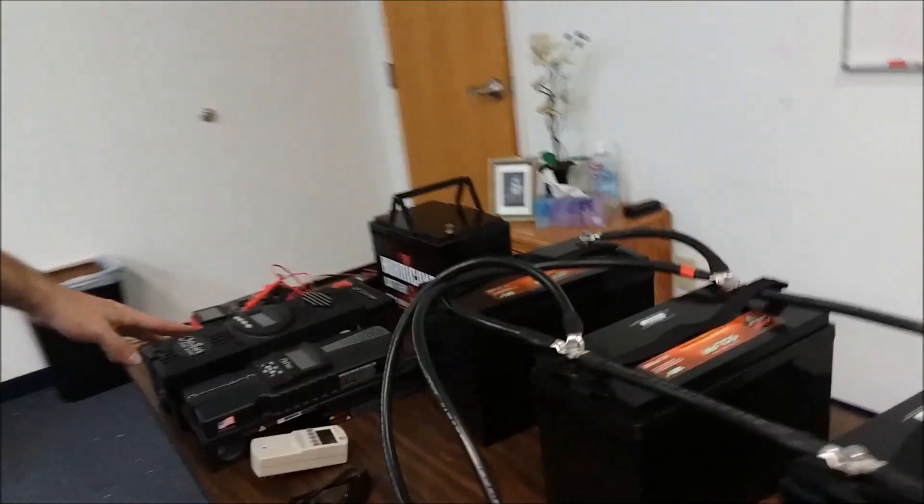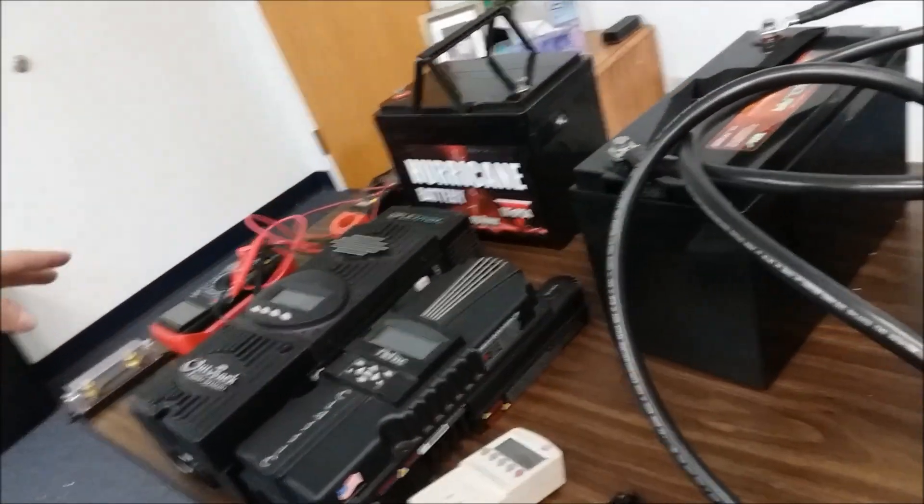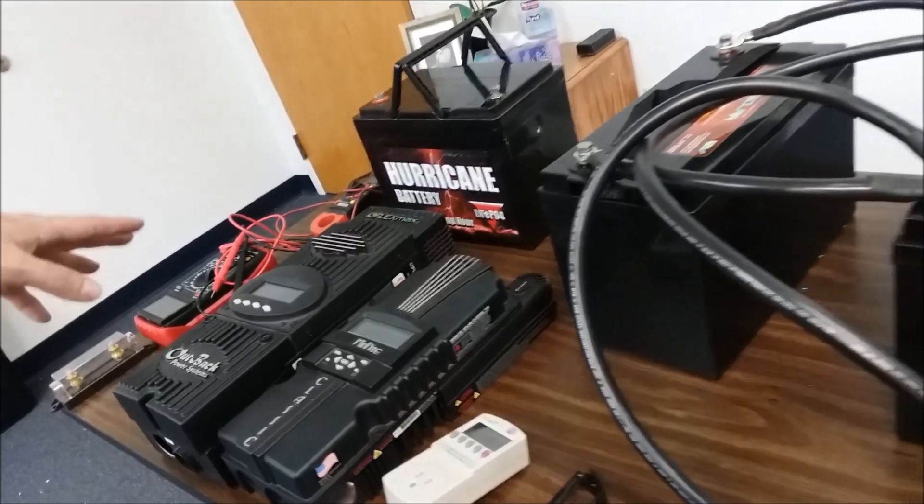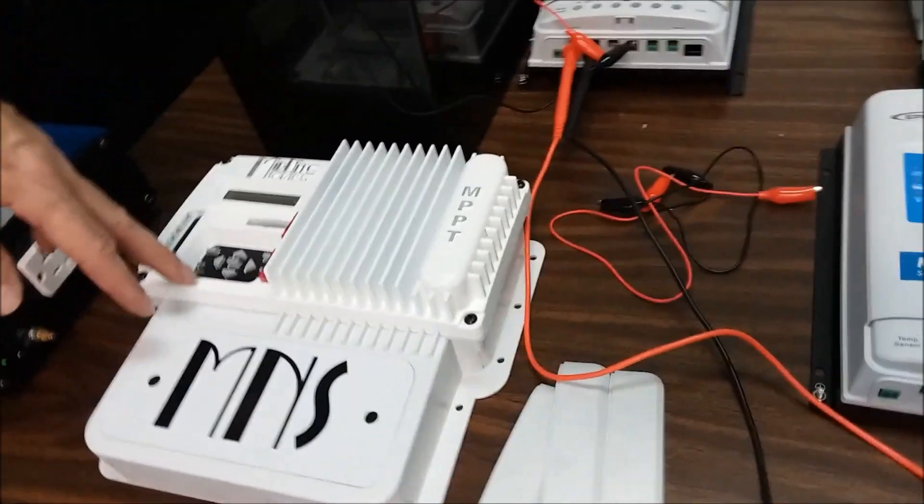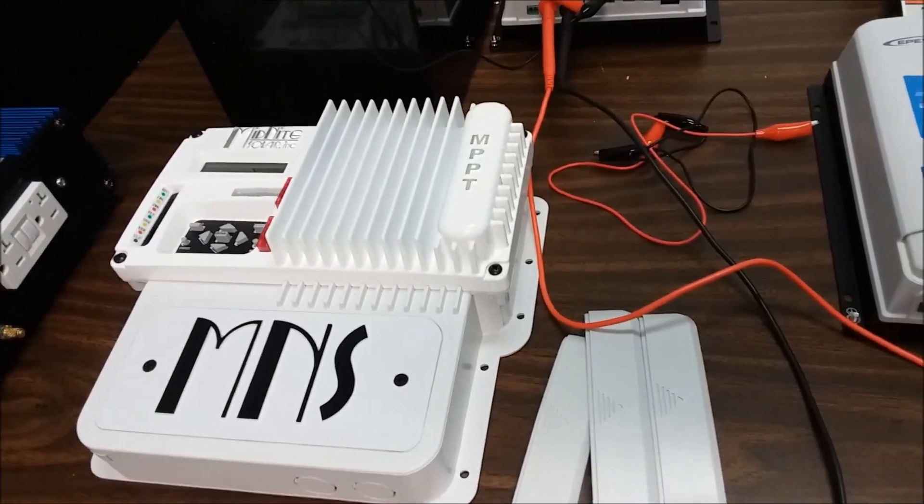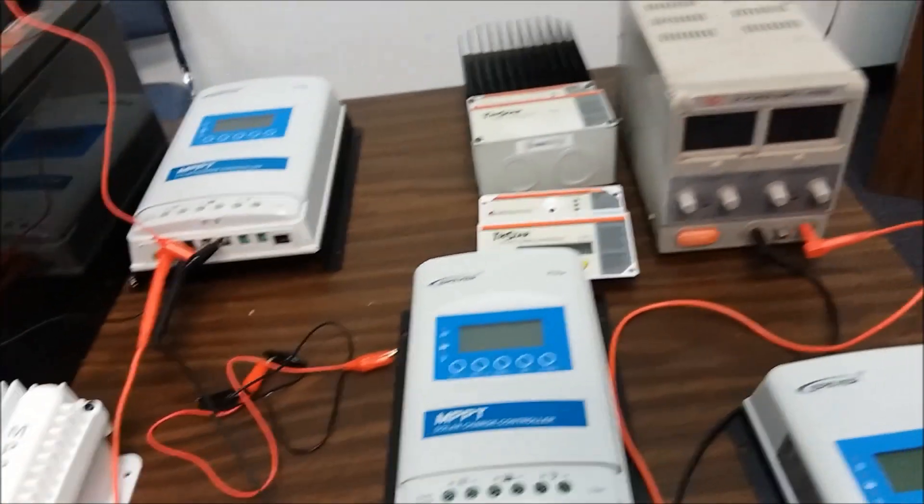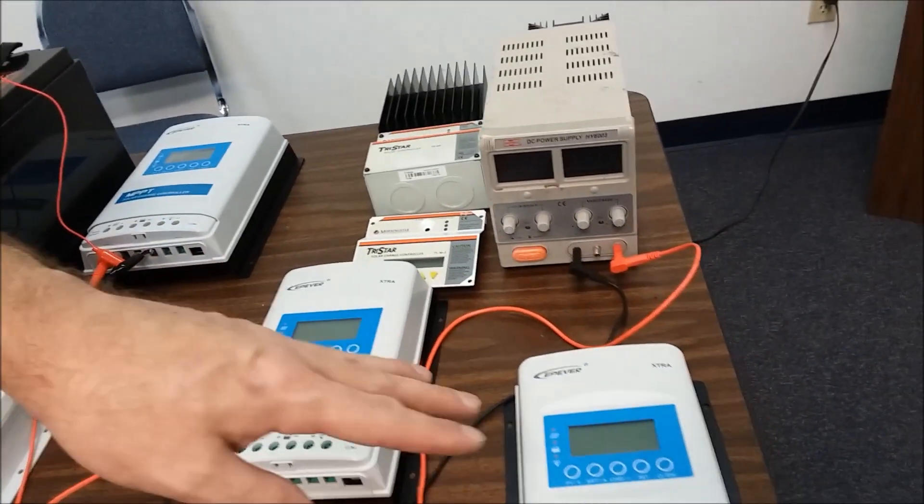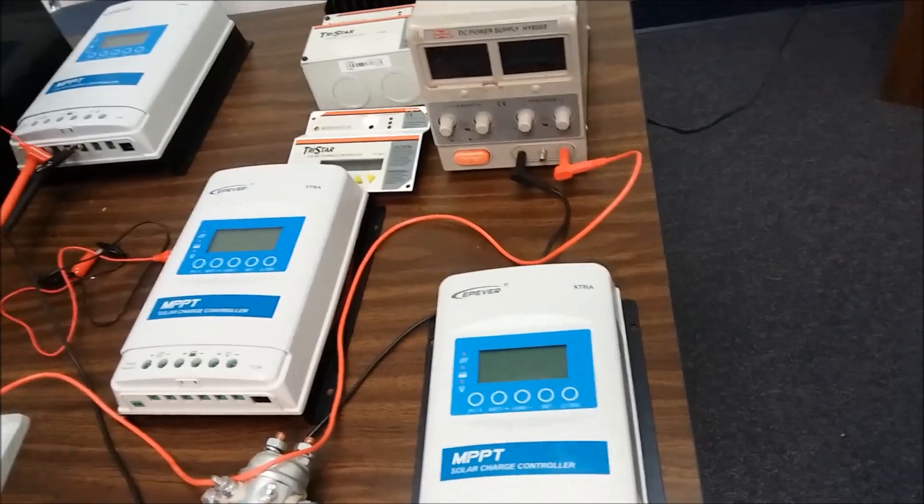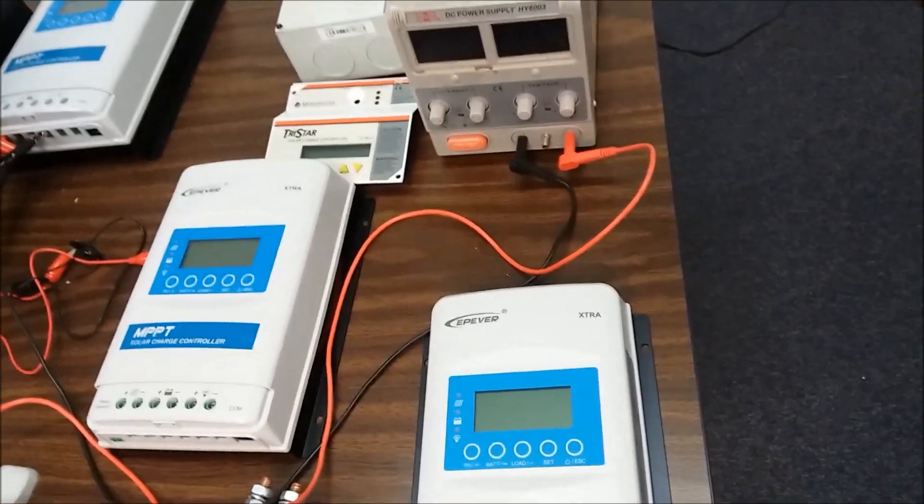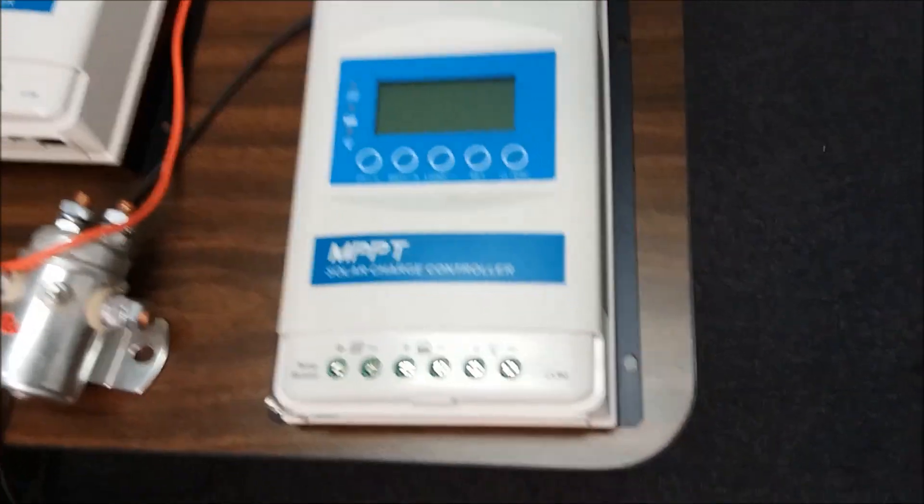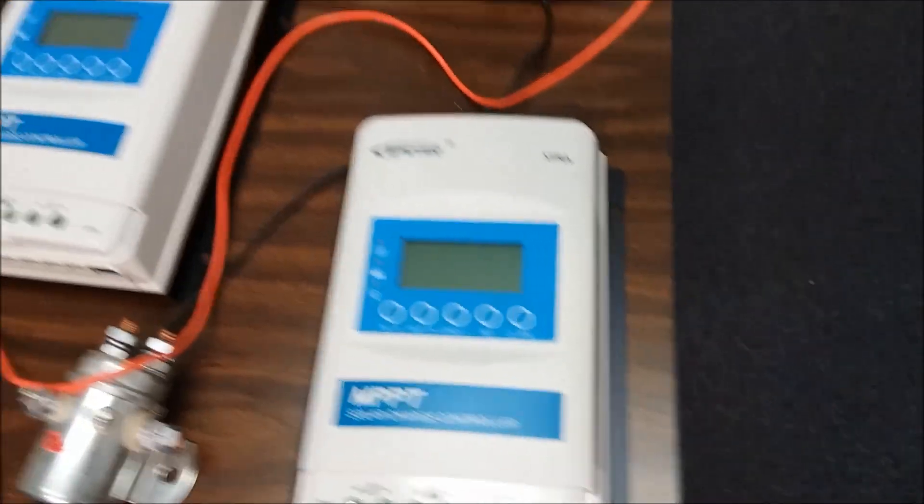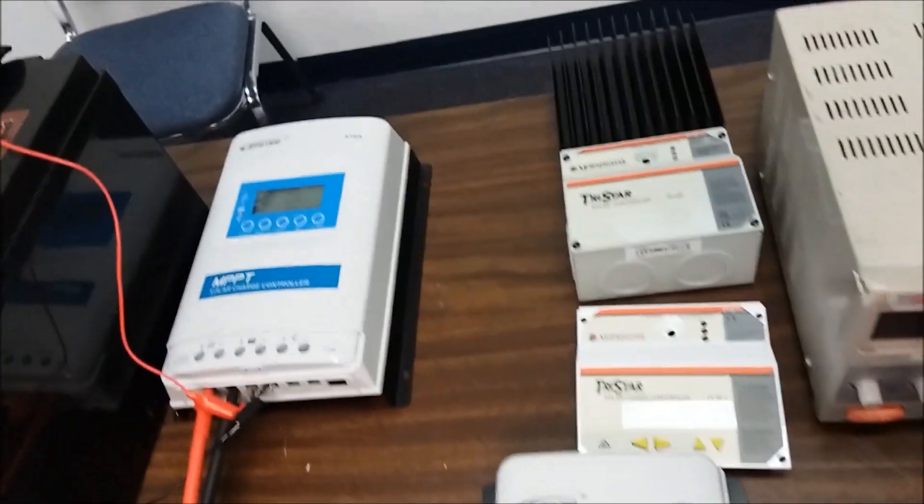You guys know that I like my Midnight Classic and my Outback FM80 for different applications. We got the Midnight Kid on the table. But for the beginner, I'm gonna show these Tracer controllers here that we have in stock. We pulled the covers off to put stuff in. This is the 20-30-40 amp Tracer and we've got this one hooked up.